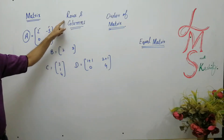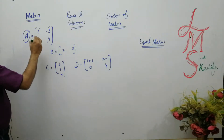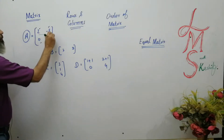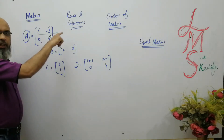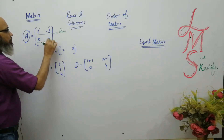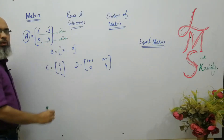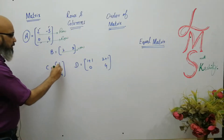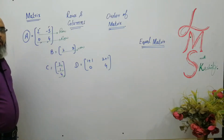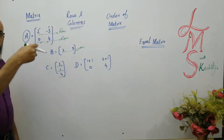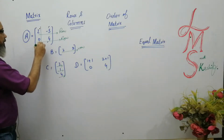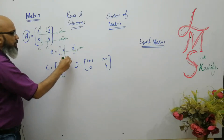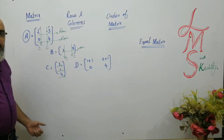Now, what are rows and columns? Very easy. The horizontal arrangement of a matrix is called a row. In this matrix, this is a row; in this matrix, this is also a row. And what is a column? A column is the vertical arrangement of real numbers. This one is a column. This arrangement is called a column. In this matrix, this arrangement is a column. So now it should be clear what rows and columns are.